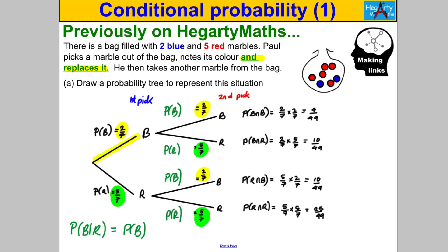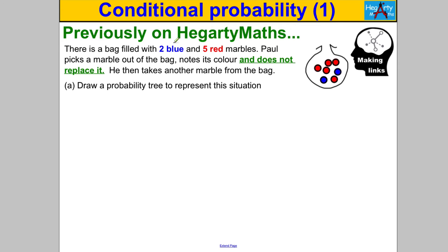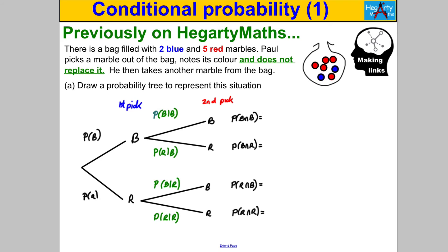The next example is almost identical, but here it says Paul does not replace the marble — and that is very important. If he does not replace it, what you get on the second pick depends on what you got on the first pick, because the number of marbles in the bag has gone down, and maybe the number of blues has gone down if you picked a blue. This is what we call a conditional or dependent scenario. On the first pick, the probability of getting a blue is two out of seven and a red is five out of seven — that doesn't change.